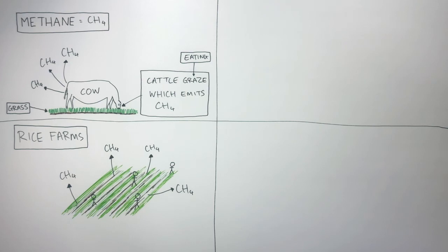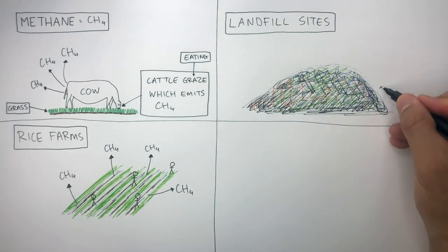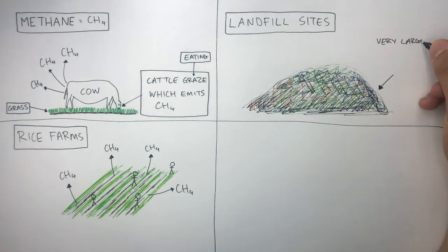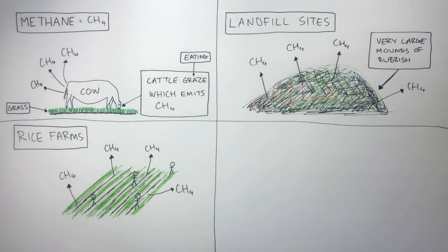Another source of methane are landfill sites. Landfill sites are areas which contain a lot of rubbish and waste from households and businesses. Landfill sites contain very large mounds of rubbish which are responsible for emitting large amounts of methane into Earth's atmosphere.